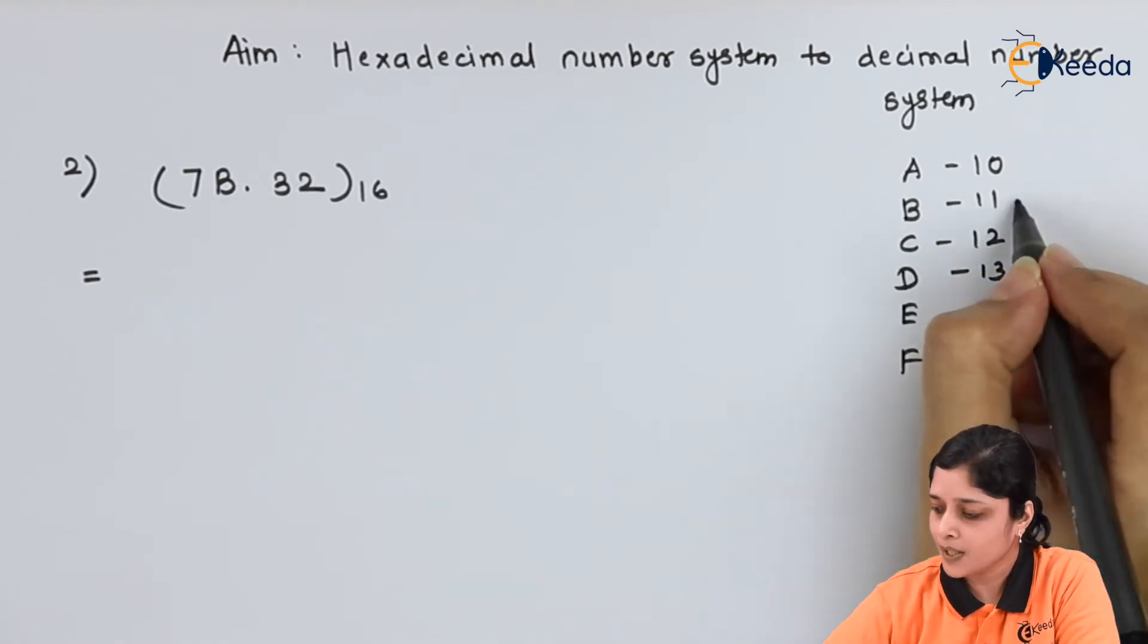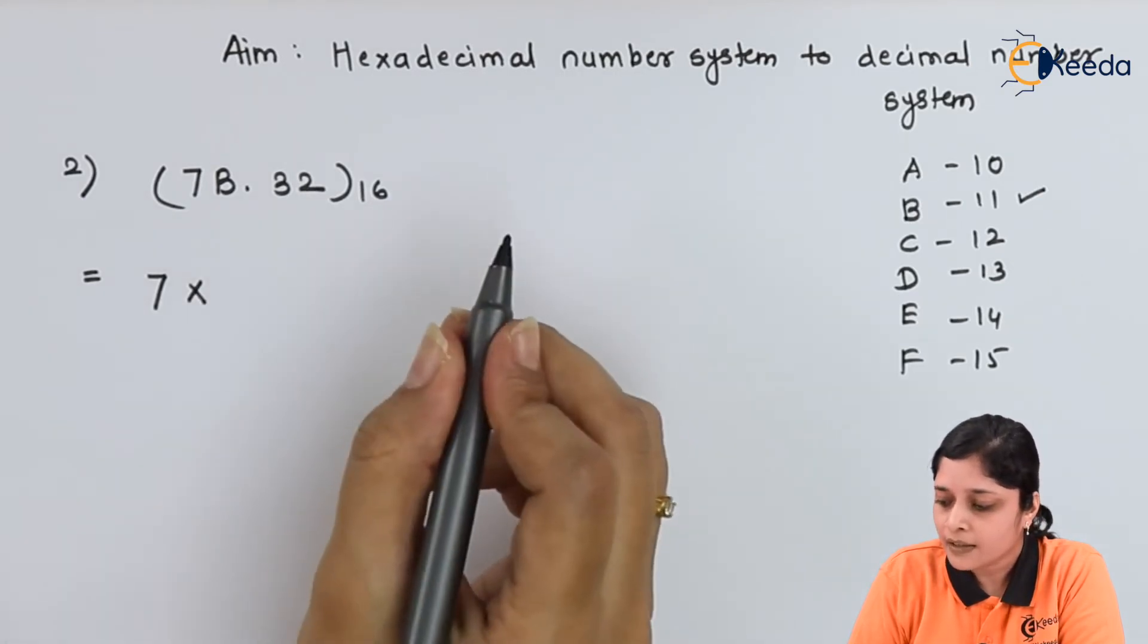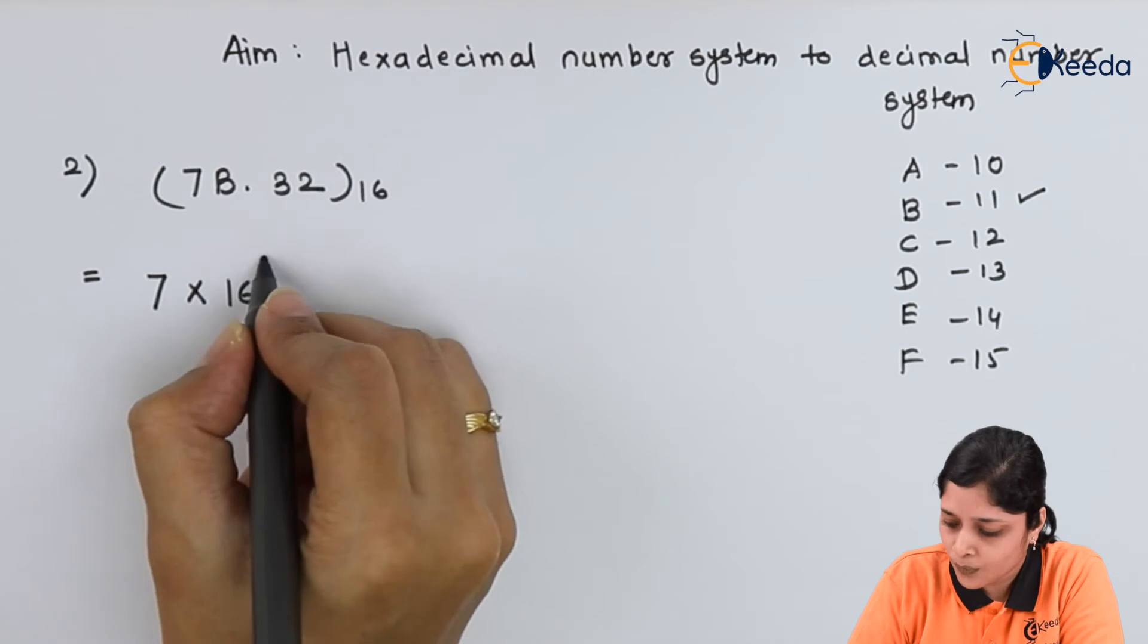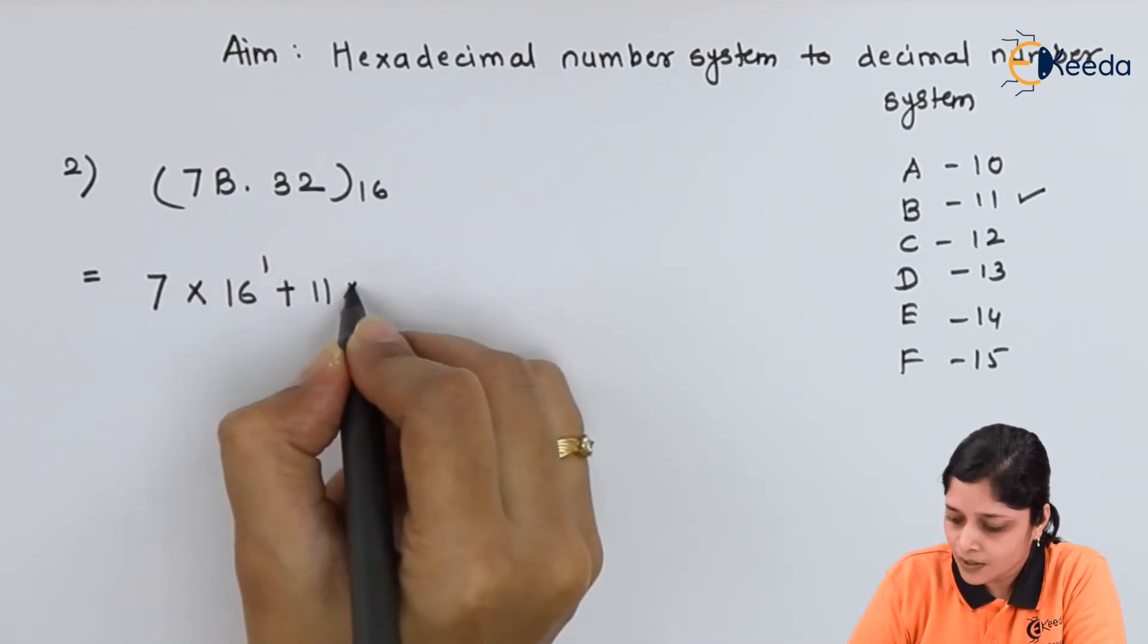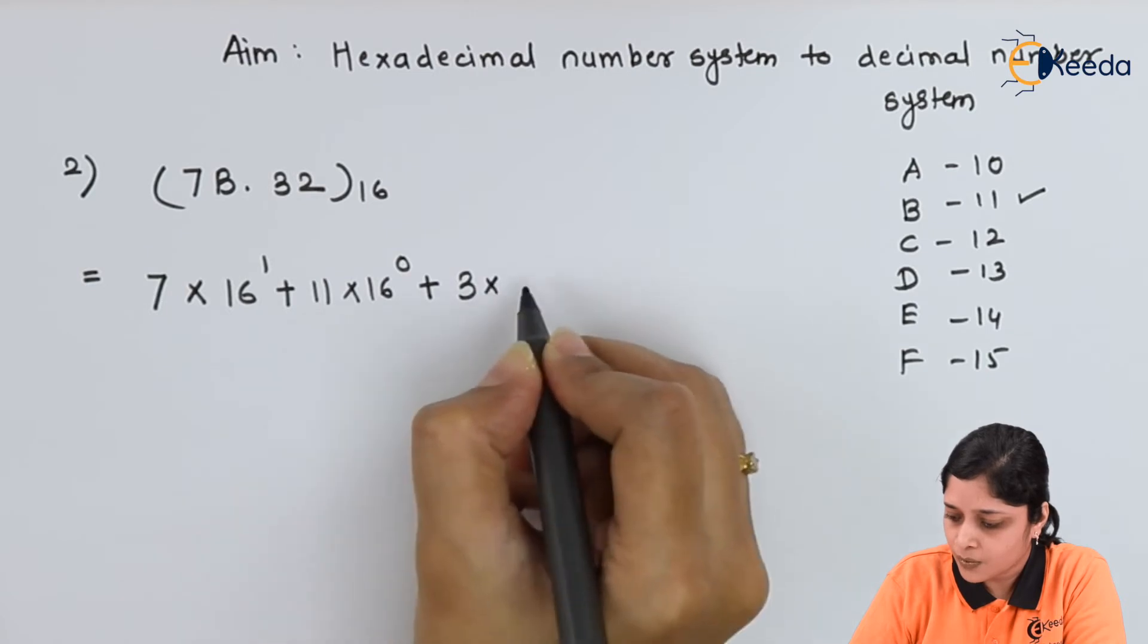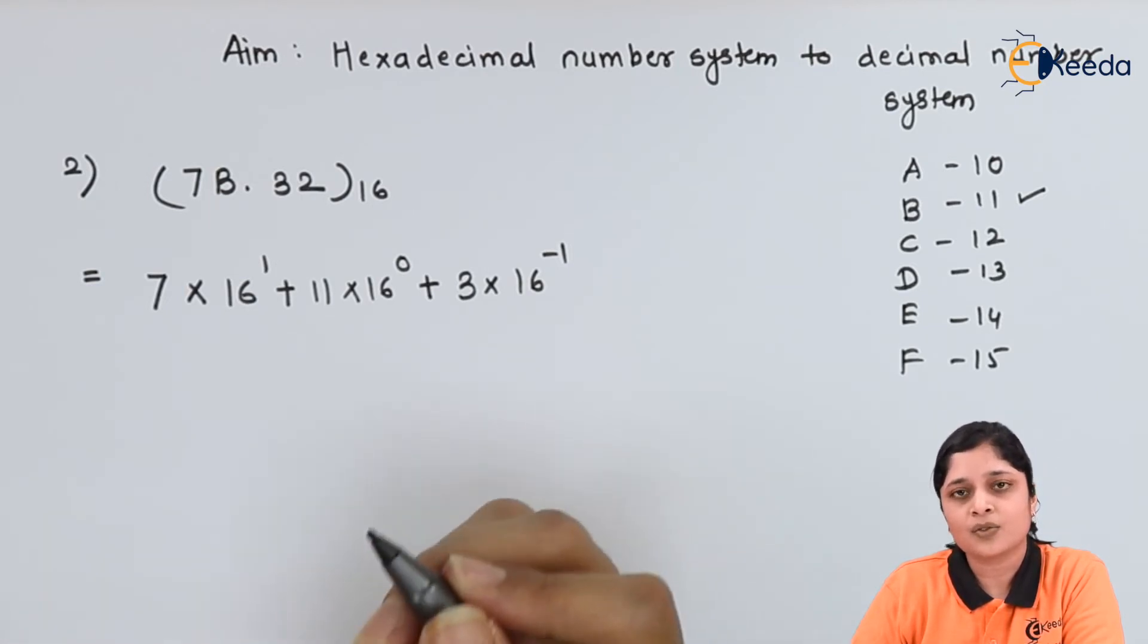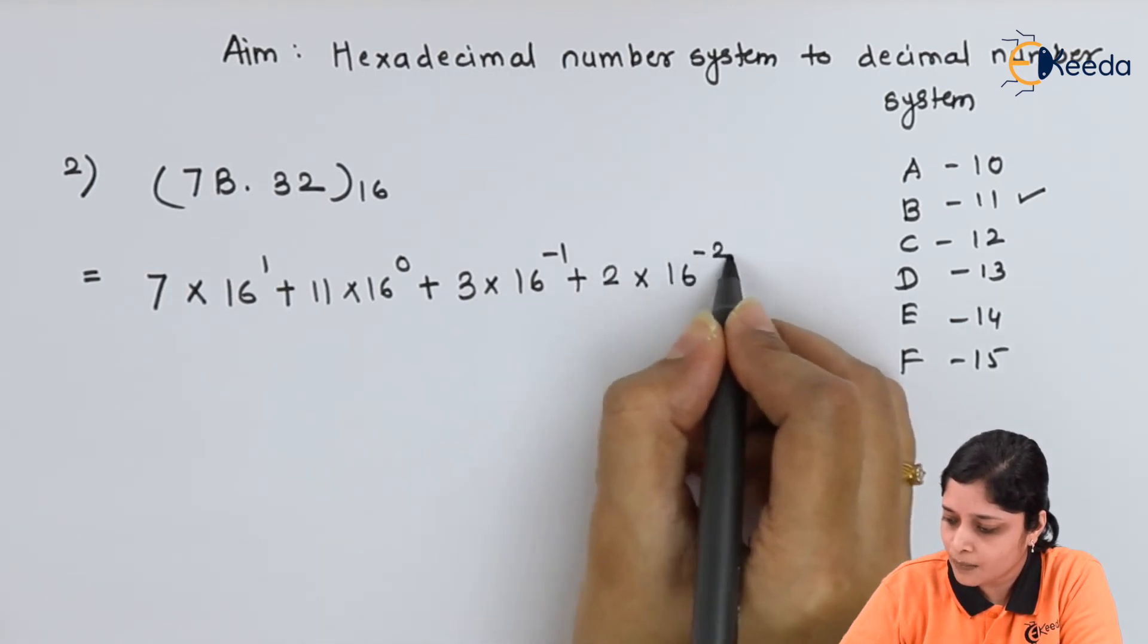7 into, here your aim is to convert it into decimal number. So 16 rest to the power, 2 digits are there, so 1 plus 1. Plus value of B is 11. 11 into 16 rest to the power 0. Plus 3 into 16 rest to the power minus 1. After decimal point you have to apply minus 1, minus 2, minus 3 onwards. Plus 2 into 16 rest to the power minus 2.